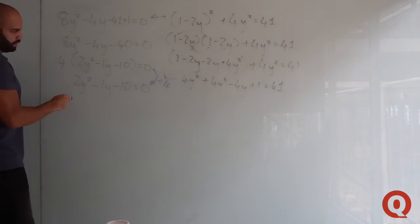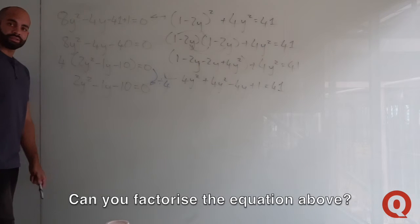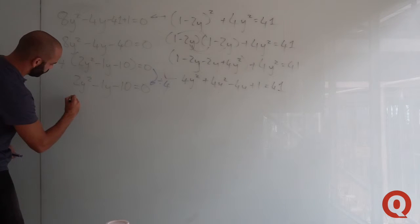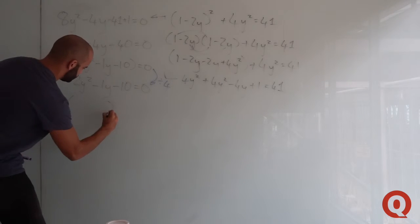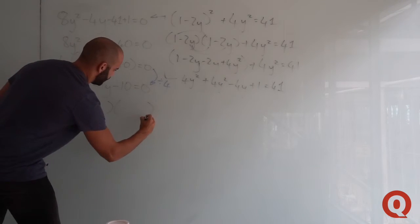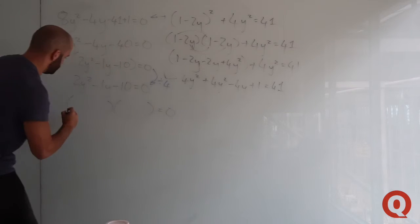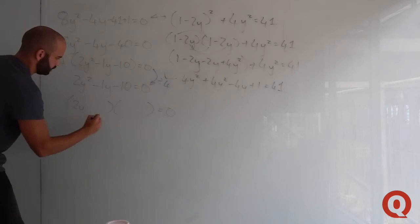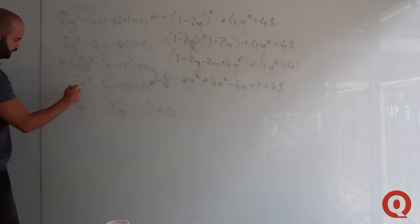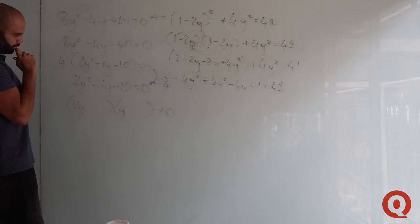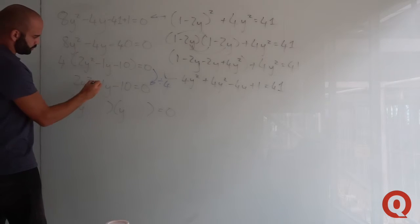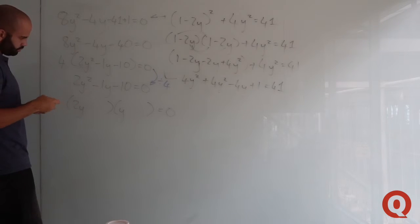Can you factorize this? That's quite straightforward. First thing to do: brackets. You've got 2y and y, which will give you a 2y squared term. You want the combined result of your middle terms to give you minus 1. So what are the factors you can put here?